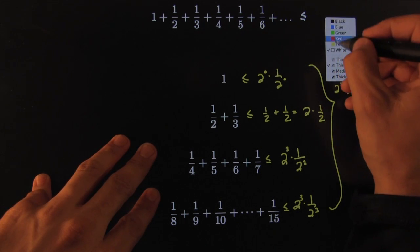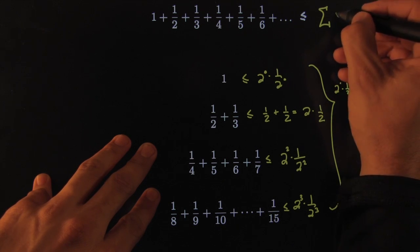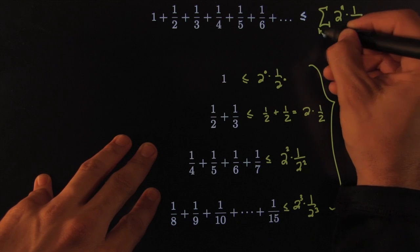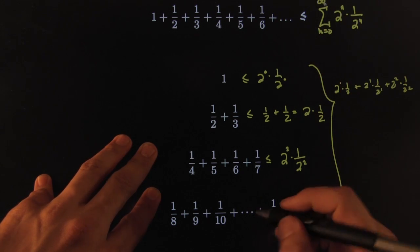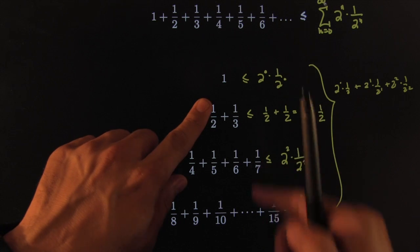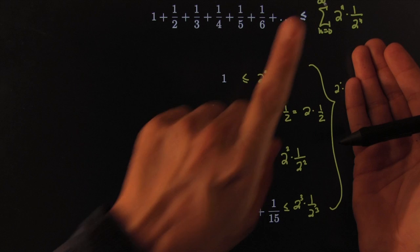I'll do it in green. So this is smaller than or equal to the sum of 2 to the n times 1 over 2 to the n, as n runs from 0 to infinity. Alright, that was neat, right? We took the harmonic series, the famous one, we wrote it in its shape, made some cute observations that we got that. But wait, there's more.